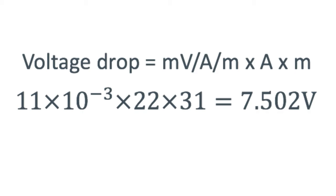So now we know that we have to use a 4 mm² cable — but this is before considering all sorts of other conditions that might apply, like whether the cable is running alongside any other cables. This is just one example of the way in which you need to use the codes to make sure that the installation stays compliant.